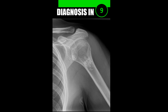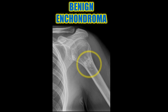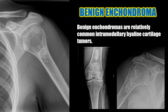Case number seven: here is a benign enchondroma of the proximal humerus. Benign enchondromas are relatively common intramedullary hyaline cartilage tumors. Radiographically they can show as stippled calcification and can look radiographically identical to bone infarcts.